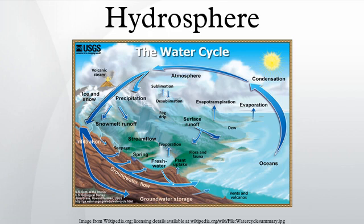This includes water in liquid and frozen forms in groundwaters, glaciers, oceans, lakes and streams. Saline water accounts for 97.5% of this amount. Fresh water accounts for only 2.5%. Of this fresh water, 68.7% is in the form of ice and permanent snow cover in the Arctic, the Antarctic, and in the mountainous regions.